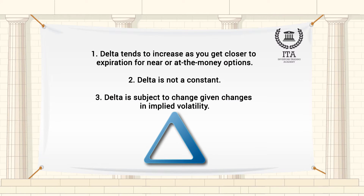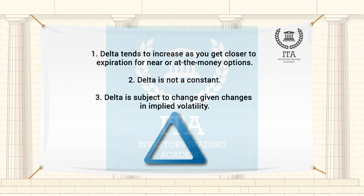Three things to keep in mind with delta. First, delta tends to increase as you get closer to expiration for near or at-the-money options. Second, delta is not a constant — a fact related to gamma, our next risk measurement, which is a measure of the rate of change of delta given a move by the underlying. Third, delta is subject to change given changes in implied volatility.